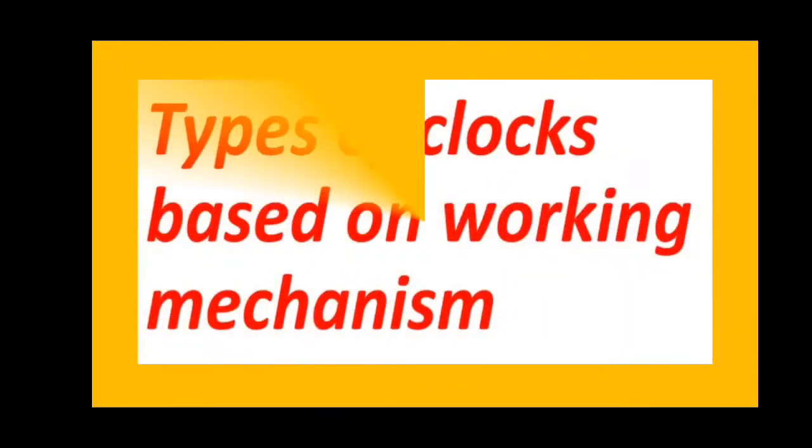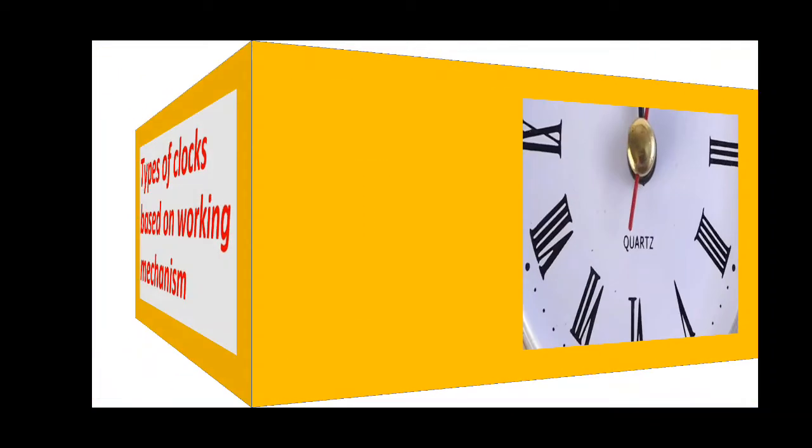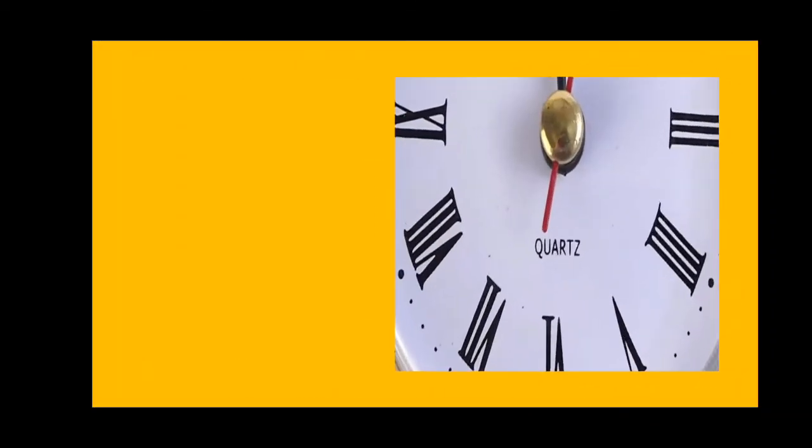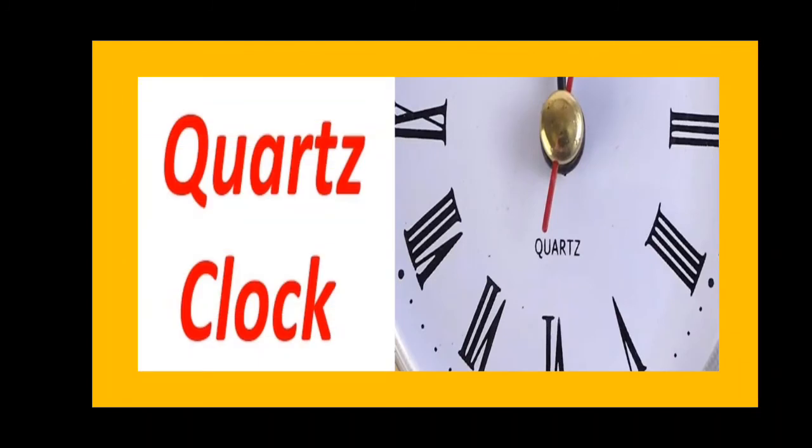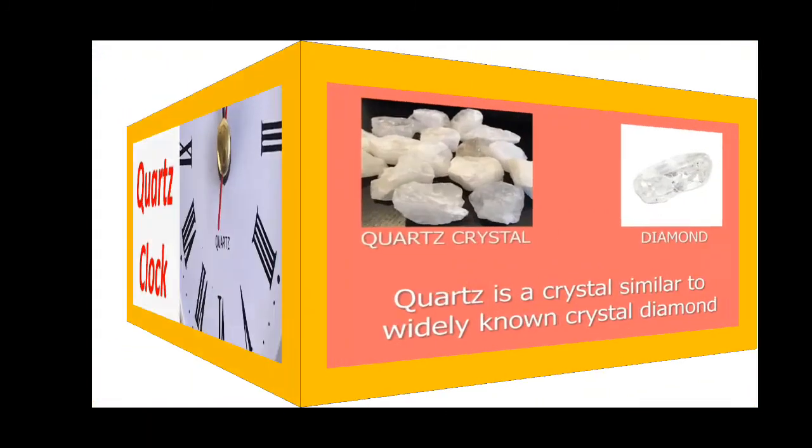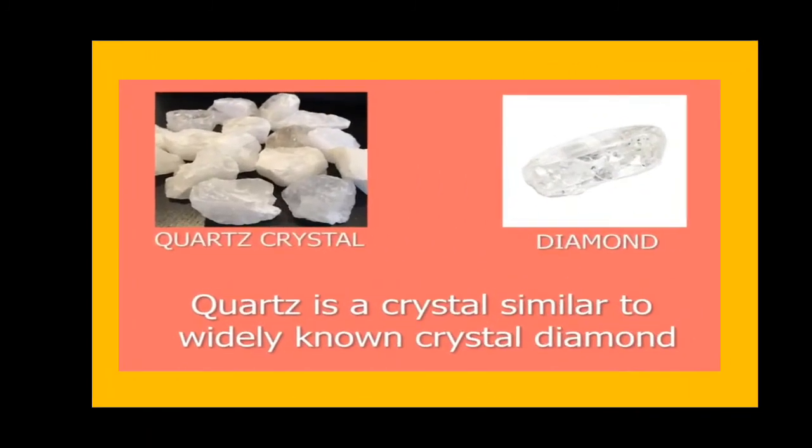Here again we have a classification of clocks based on their working mechanism. Based on their working mechanism, we can classify clocks as quartz clocks and atomic clocks. Here is a quartz clock. All those clocks where quartz is written on the dial are called quartz clocks. These clocks are activated by electronic oscillations which are controlled by quartz crystal.